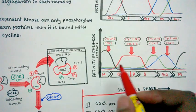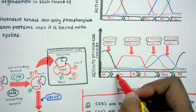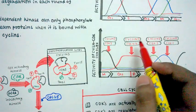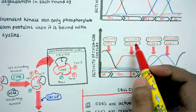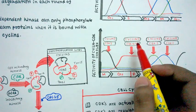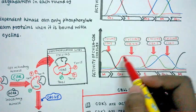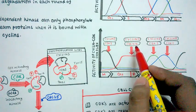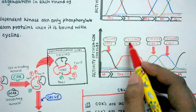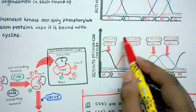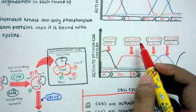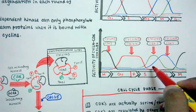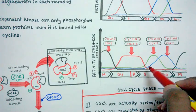The most important G1 cyclin is cyclin D, especially cyclin D1. In a separate video I will discuss why cyclin D is so important. Cyclin D has a CDK partner of either CDK4 or CDK6, so it can bind with CDK4 or CDK6, and this whole cyclin-CDK complex can then perform its job.